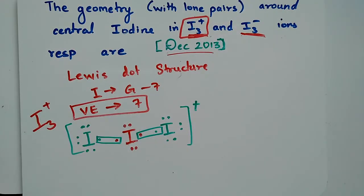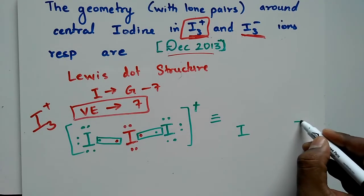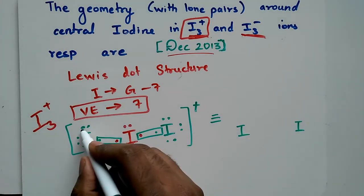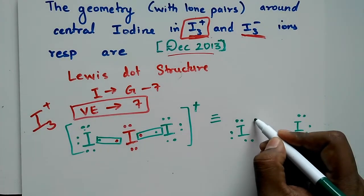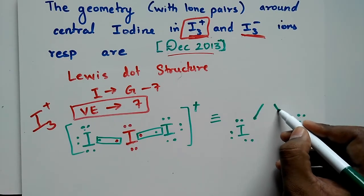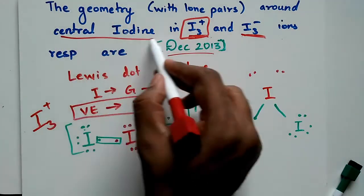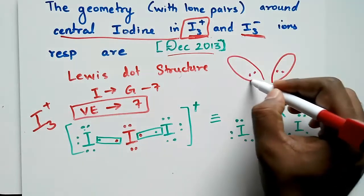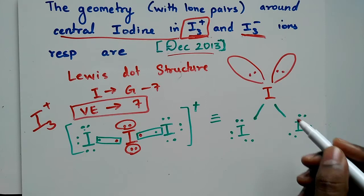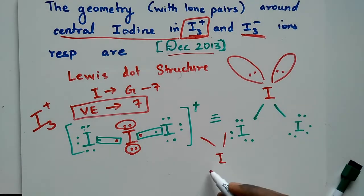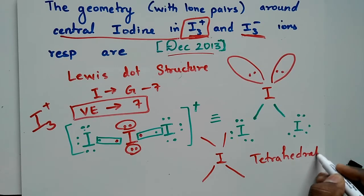This is the Lewis dot structure. If you draw it properly, we will have two peripheral iodines, and then the central iodine will have 6 valence electrons plus one bonding electron. We are mainly concerned about the central iodine. It has two lone pairs of electrons. Observing the shape, this is a tetrahedral shape.